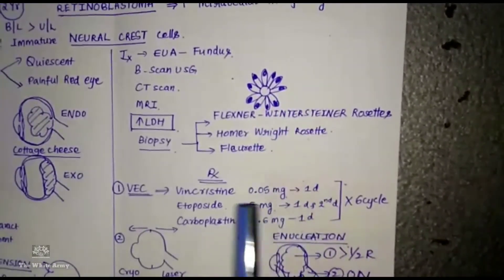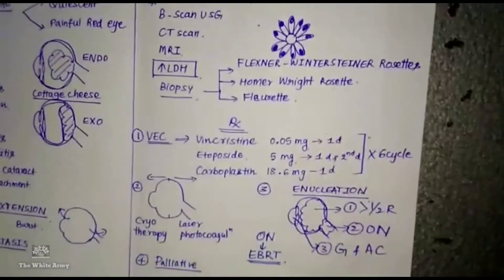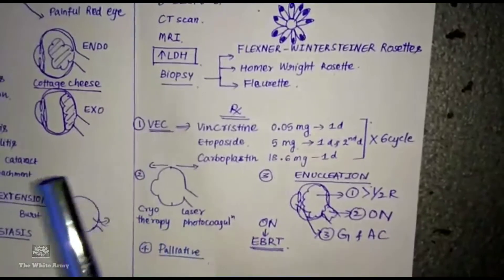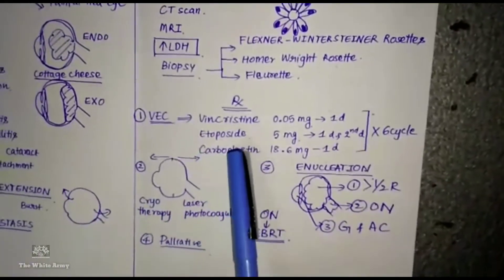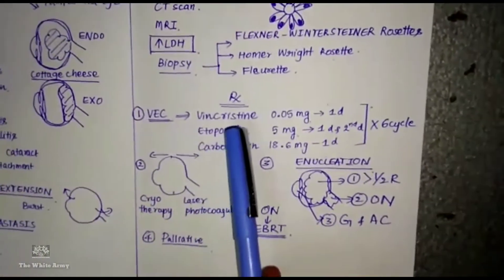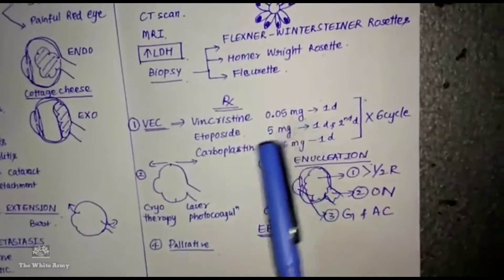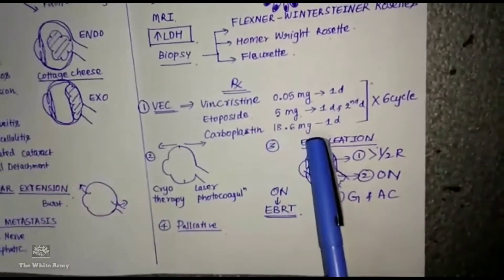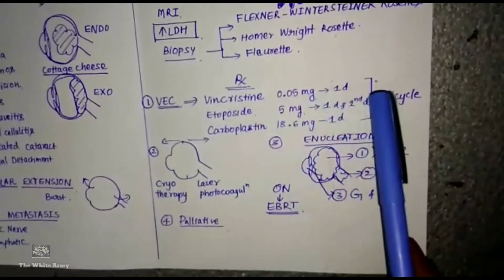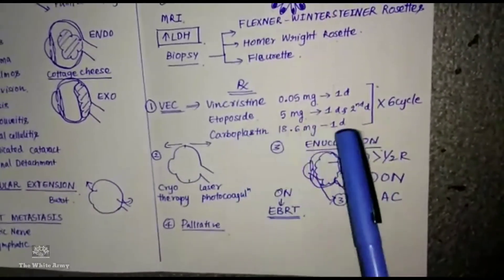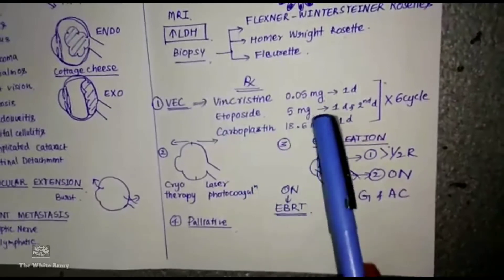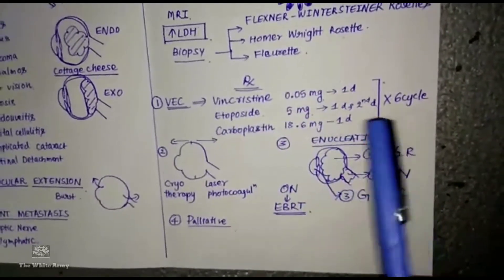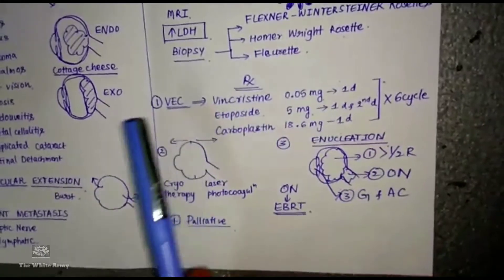Coming to treatment, in chemotherapy you have the VEC regimen: vincristine, etoposide, and carboplatin. Vincristine 0.05 milligram, etoposide 5 milligram, carboplatin 18.6 milligram. You will give vincristine and carboplatin on day 1, etoposide on day 1 and day 2. So three days in a week, six cycles you will give.